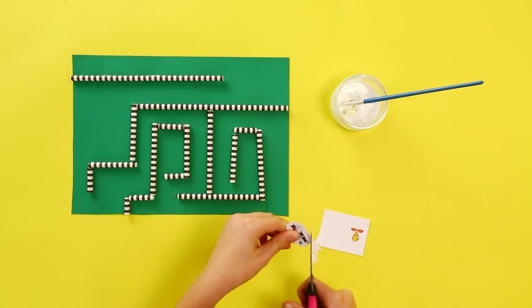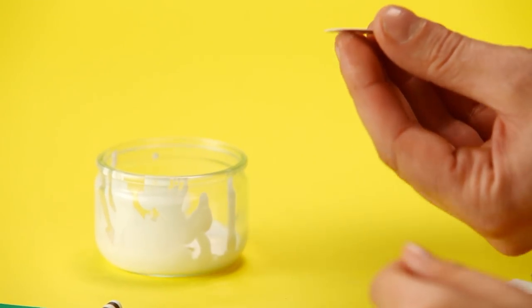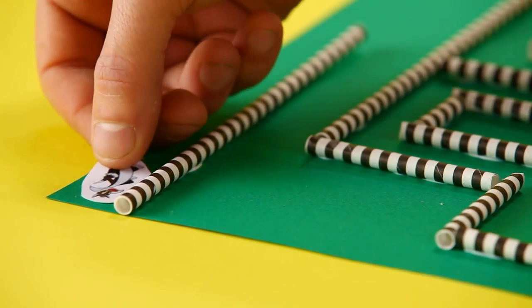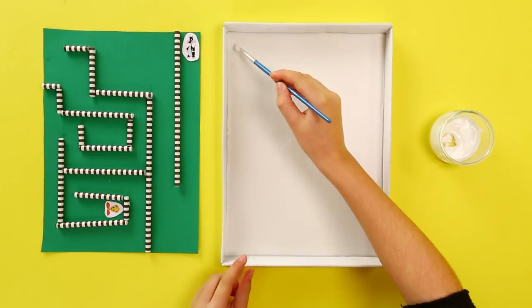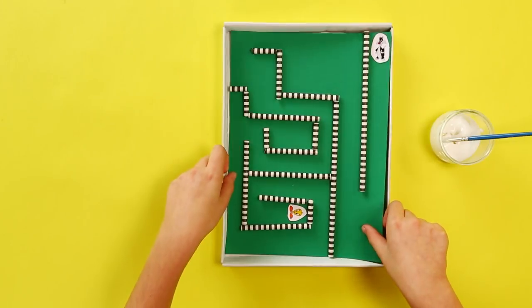Now to add the final touches. Cut out your characters and glue them to the start and end of your maze. Take your shoebox lid and stick your maze to the bottom of it.